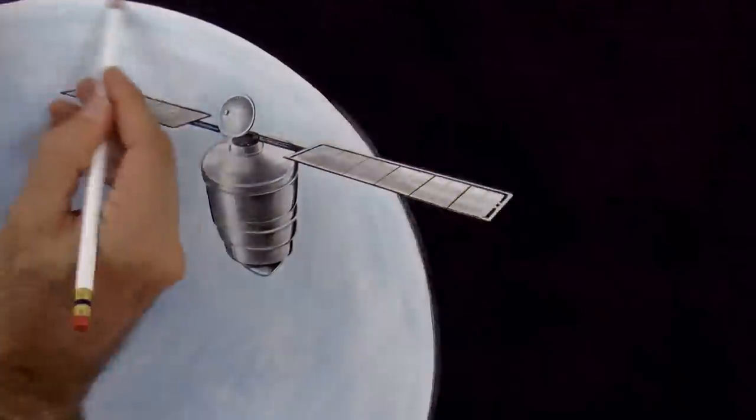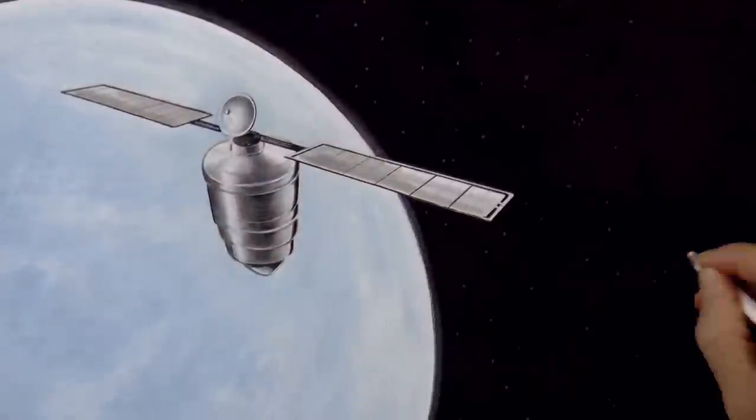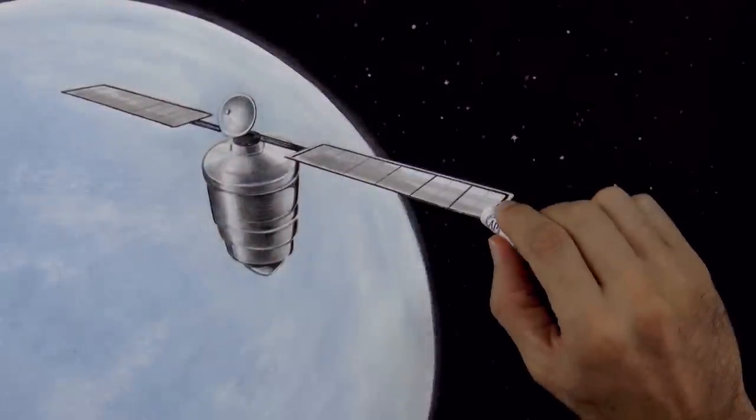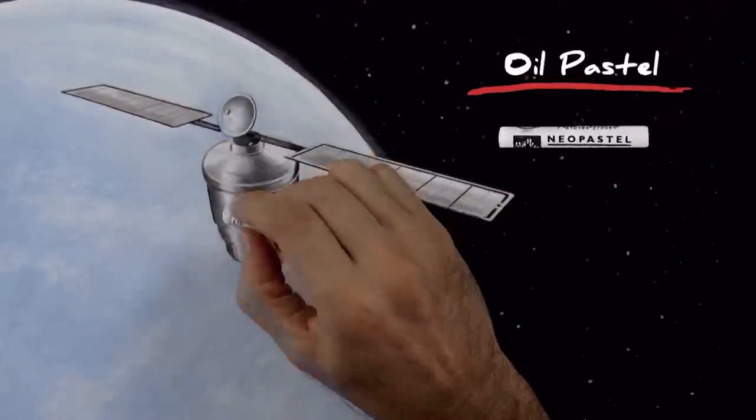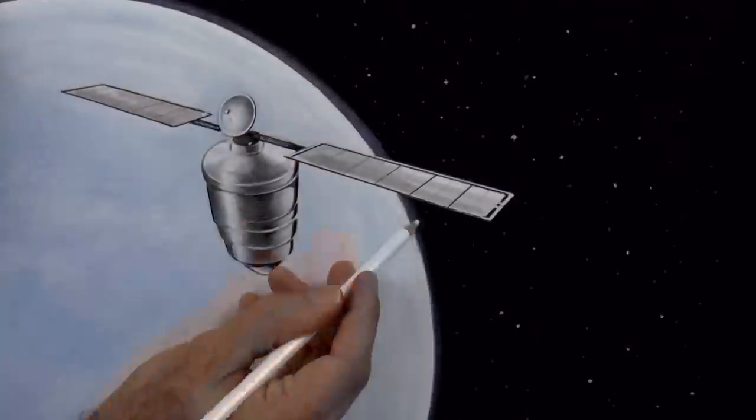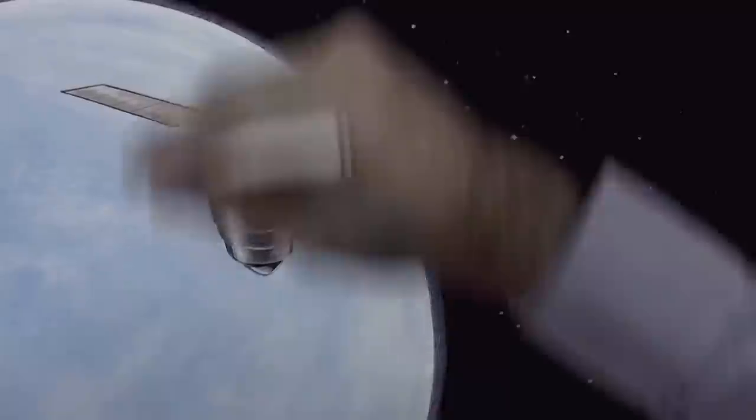With a white pencil we refine the border of the Earth and create the stars. With a white pastel we pull some lights on the satellite, we draw the glow of the planet, and it's ready!